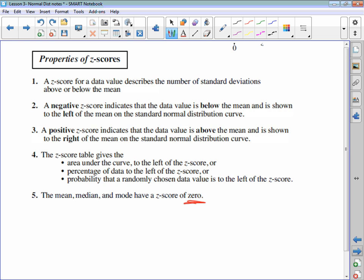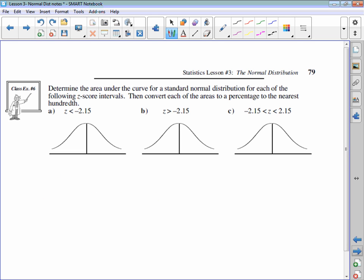Zero is exactly halfway. So when we look at this one here, we're going to solve the problem. We're going to determine the area under the curve for the standard normal distribution for each of the following z-score intervals. This is the easiest kind. z is less than negative 2.15. So here's the mean of 0. Negative 2.15 is going to be somewhere over here. We're looking for this area here, which is exactly what the z-score tells us.